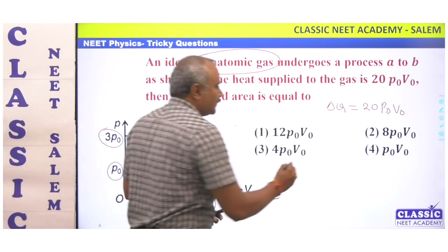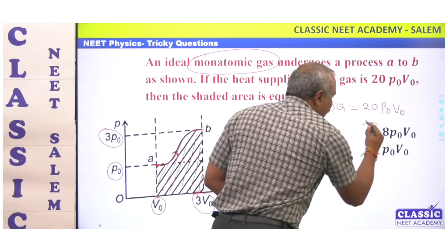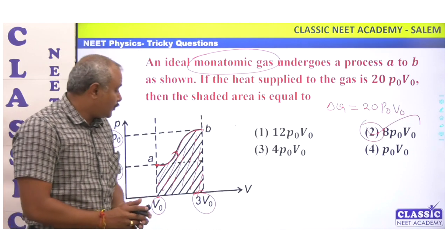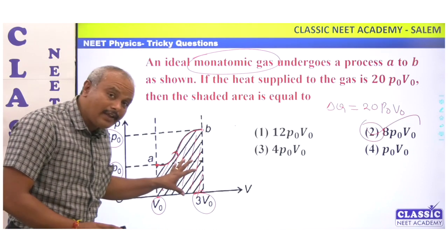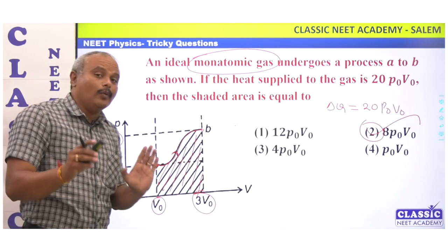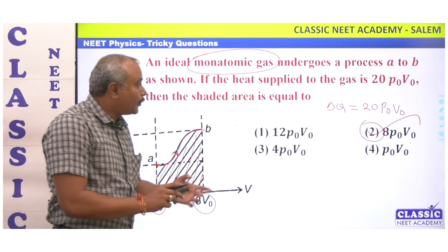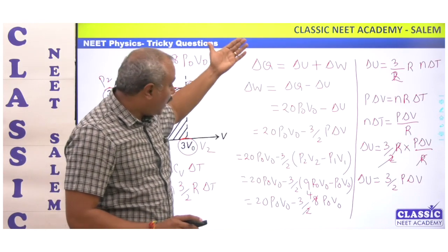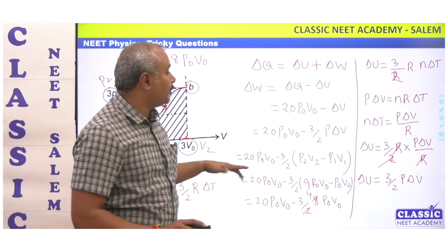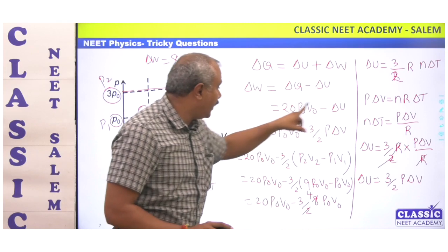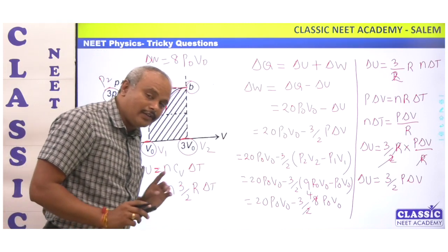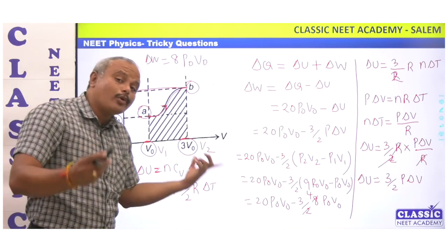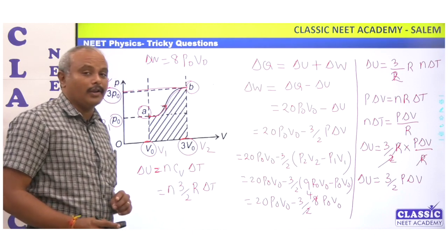So the work done, which equals the shaded area, is 8P0V0. To summarize the method: first apply the first law of thermodynamics W = Q − ΔU, then use the ΔU = nCv·ΔT formula with Cv = 3/2 R for a monatomic gas, and solve the calculation.